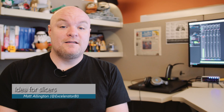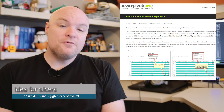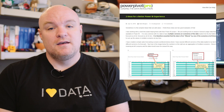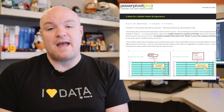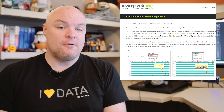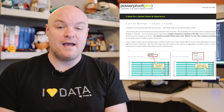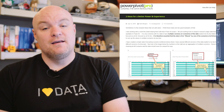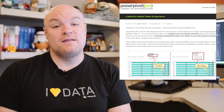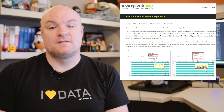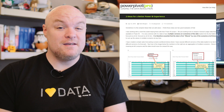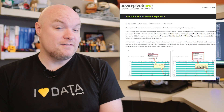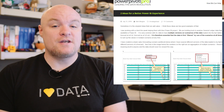First up is a blog post from Matt Allington where he looks at two ideas for slicers in Power BI. He makes a good case for why you can add value to a slicer to help people understand what they're looking at. He gives a good scenario for where this comes in handy and also talks about a way you can add potential warning messages. If you're interested in being creative with slicers, be sure to check out this blog post.